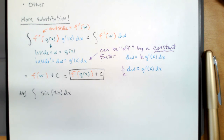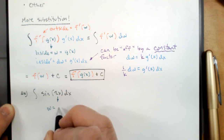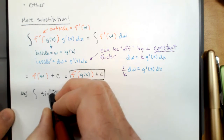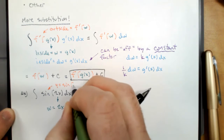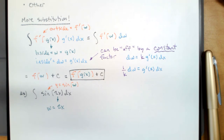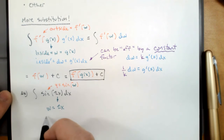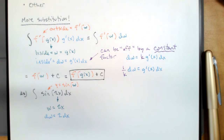You've been using substitution all along — put your heels together and say there's no place like home. You already did substitution; you're just doing a shortcut version. If we say w is 2x, the outside function is sine of w, so the thing we're actually integrating is sin(w). If w is 2x, then dw is 2dx. Looking at the original integral, we've got a factor of dx but it doesn't have a two — so we're off by a constant and we can just divide it out.